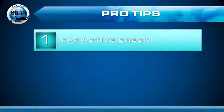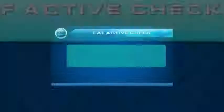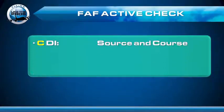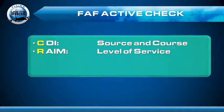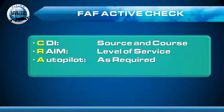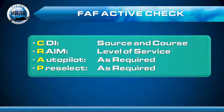Pro tip number one: run a CRAP check when the final approach fix becomes the active waypoint. C stands for CDI — source and course. Confirm the CDI is set to GPS and you've got the correct course. R is RAIM — this is where you confirm the level of service. A is autopilot — make sure it's programmed as required. And P is altitude pre-select. Remember, on an approach with vertical guidance, you'll set the altitude pre-select differently than on an approach with no vertical guidance.